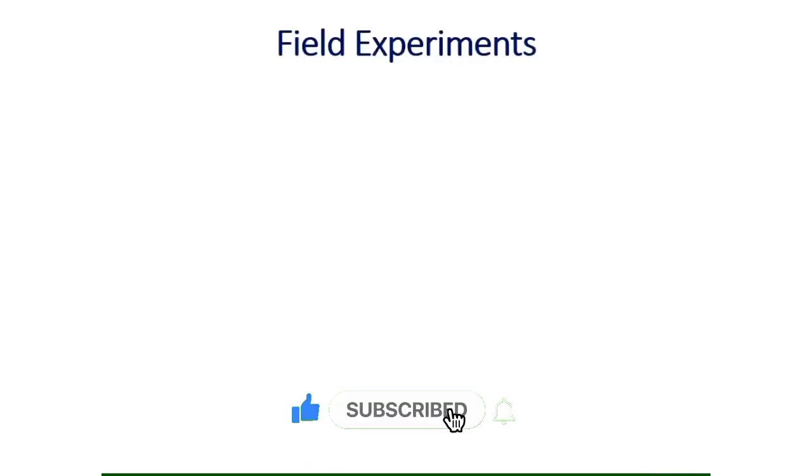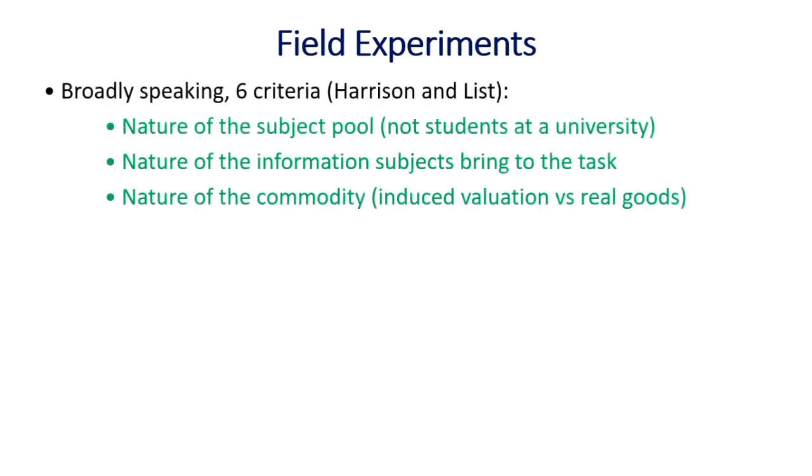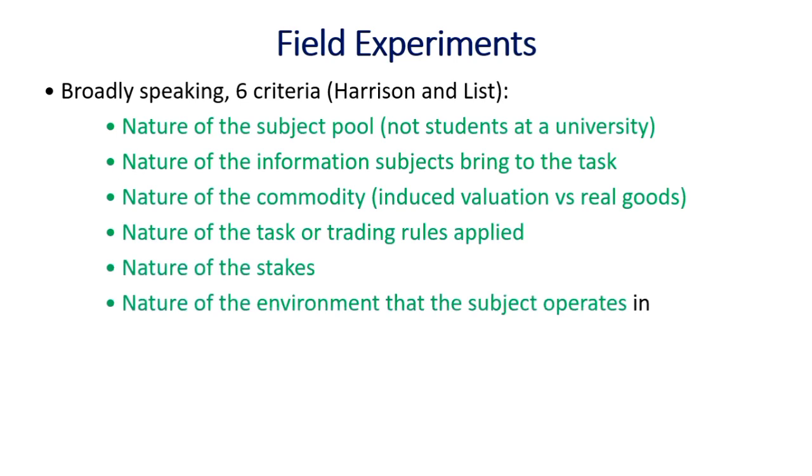According to Harrison and List, there are six important criteria about field experiments that must be kept in mind. Now, the subject pool consists of general people who are into earning or work since a number of years and their prospect about things is different than of students. Nature of information subjects bring to the task is not much controlled by the researcher. In field experiments, often real goods are used which have real values in them and people understand that. Nature of tasks or trading rules are applied. Nature of the stakes of the stakeholders involved may be quite complex and different. Nature of the environment that the subjects operate in can influence their choices.